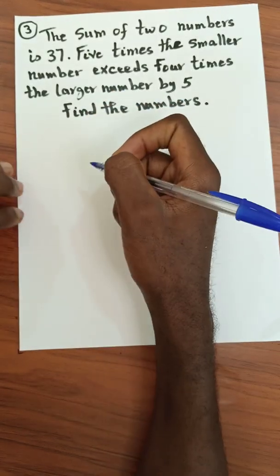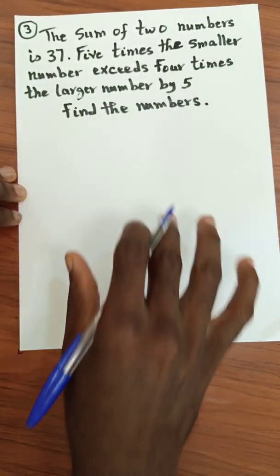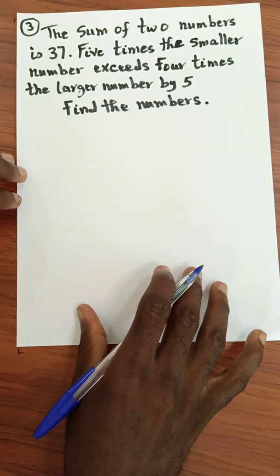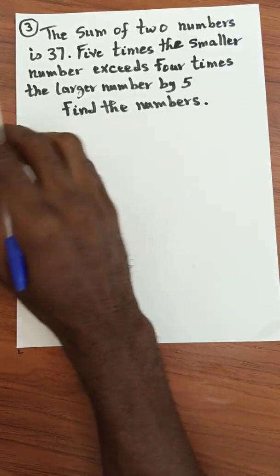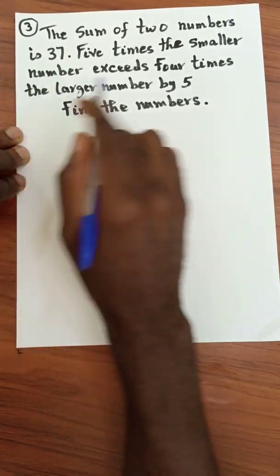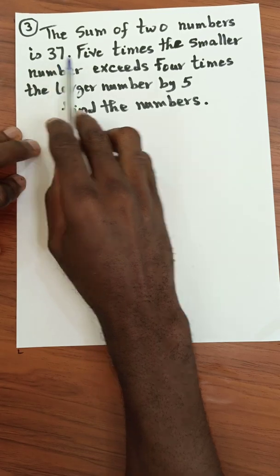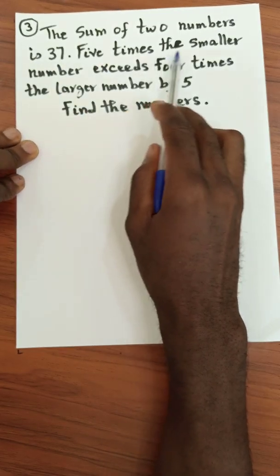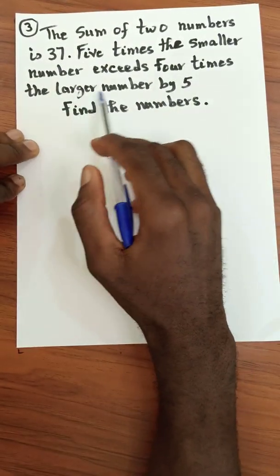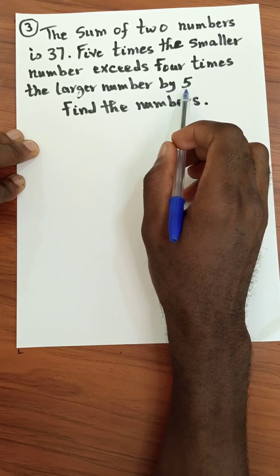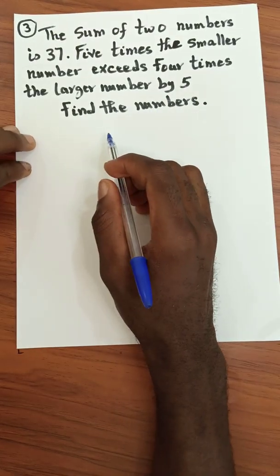Here again with a word problem. It says the sum of two numbers is 37. Five times the smaller number exceeds four times the larger number by five. Find the two numbers.